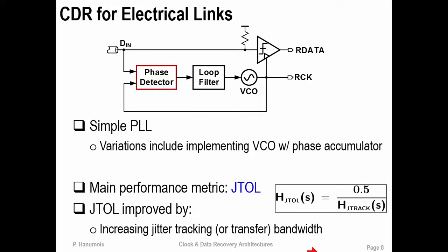In practice, one would really want to improve jitter tolerance only by increasing the jitter tracking bandwidth. If the phase of the data moves, one would ideally like to move the phase of the recovered clock by the same amount so that the phase error remains zero. Jitter tolerance is inversely proportional to the tracking capability of a PLL loop; the jitter tolerance transfer function equals 0.5 over the jitter tracking transfer function. In the context of electrical links, increasing jitter tracking bandwidth is essentially the main goal in CDR design.